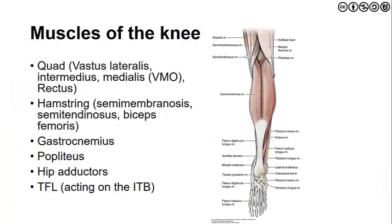As we now begin to consider the muscles of the knee, the big muscle on the anterior portion of the femur is our quadriceps, which consists of the vastus lateralis, intermedius, medialis (VMO), and rectus femoris. In the hamstring group we find the semimembranosus and semitendinosus as well as the biceps femoris, consisting of both a long head and a short head. The gastrocnemius is part of the knee as a two-joint muscle, with lateral and medial heads inserting proximal to the tibiofemoral joint. The popliteus is also implicated, as are the hip adductors on the medial side, and finally the TFL acting through the distal insertion of the ITB on the lateral side of the knee.